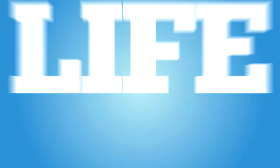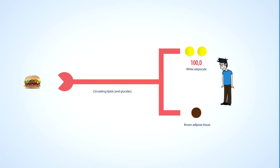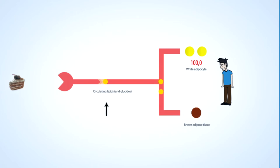On the contrary, what would life be with active brown adipose tissue? The diagram shows, starting from food ingested in excess, via circulating lipids, energy dissipation in the brown adipose tissue. This energy dissipation prevents the development of obesity.